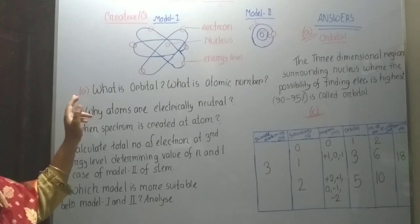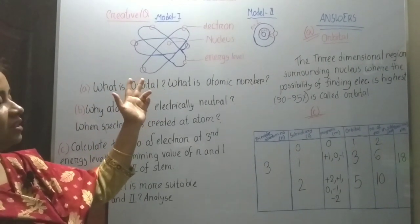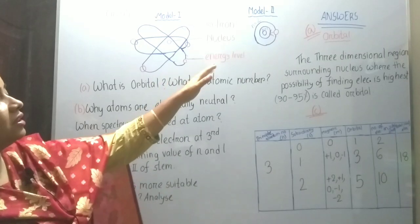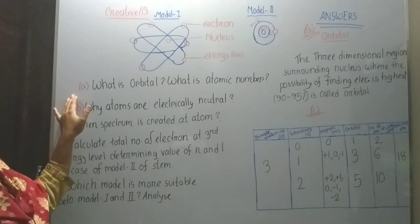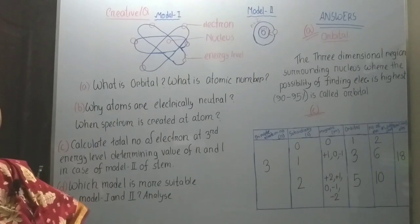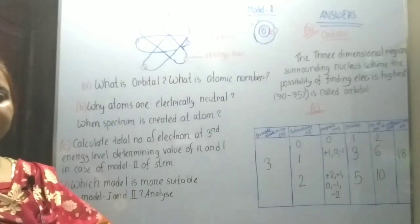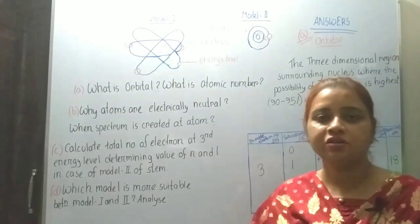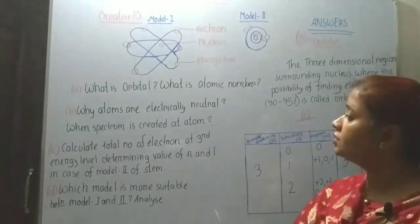First, creative question number 1. There are two figures — you can understand there are two models. This one is one atom model, and another one is another atom model. Come to question number A: What is orbital? You know what is orbit. Orbit is the path of the electrons — the path where electrons are roaming around the nucleus. These are known as orbits.